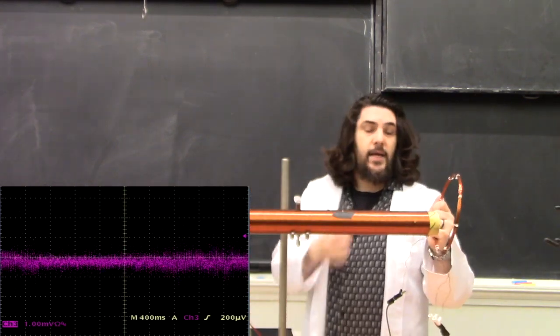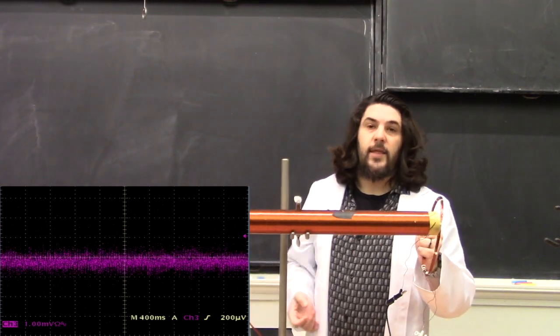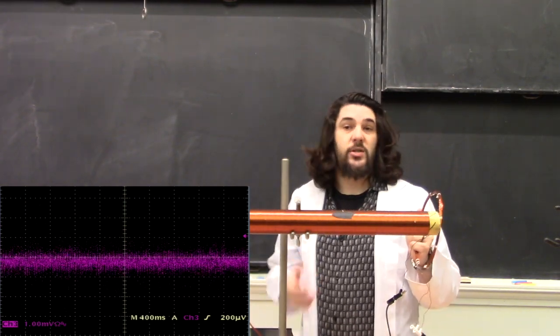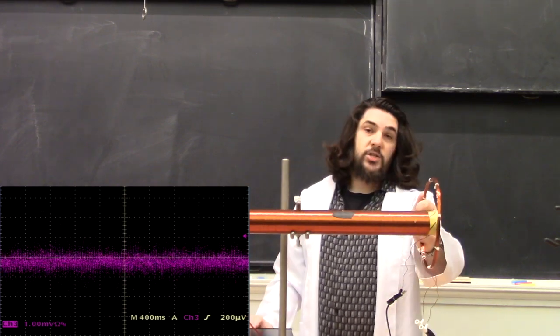When we look at a bar magnet and a loop of wire, the only thing we can really change is the area that the magnetic flux is going through. We can't change the strength of the magnetic field. We can with a solenoid by changing the current.